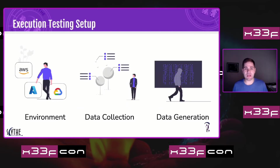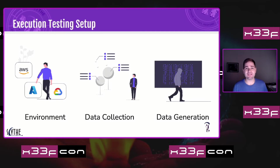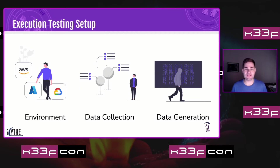Our testing setup has three key components: an environment — many testers are moving to cloud for standing up test beds; data collection from that environment, using built-in or specific project tools; and data generation. We often think of red team tools or blue team tools, but at its core, we're generating data in an environment to work off of.